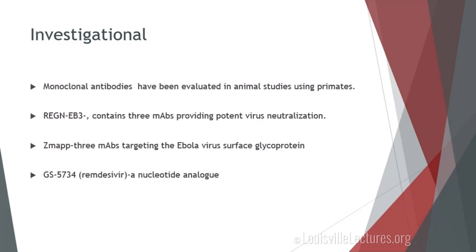What about monoclonal antibodies? They've been evaluated in animal studies using primates. The REGN-EB3, which is a cocktail consisting of three monoclonal antibodies, provides potent virus neutralization. ZMapp is another cocktail that targets the surface glycoproteins of the Ebola virus. The GS-5734 is a nucleotide analog. All of these are still under investigation.